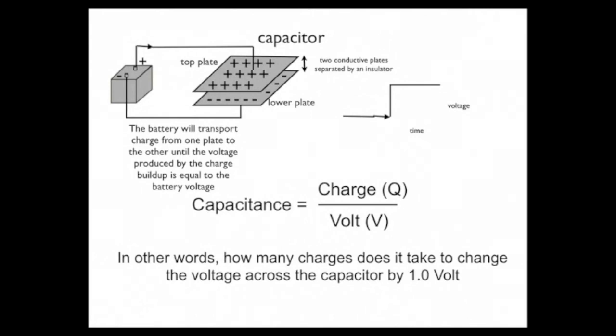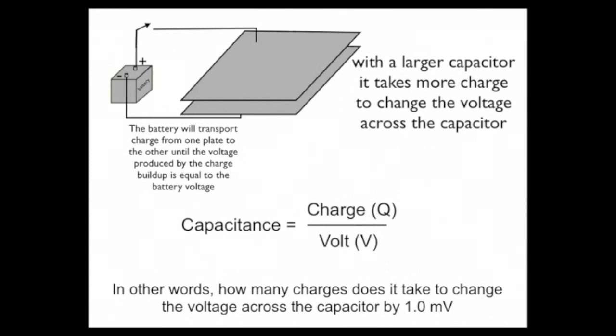Now, the capacitance is going to be determined by the size of the capacitor. Let me illustrate that. Let's take a capacitor that's larger, twice the size of the other one. The plates are twice as big. And now we connect it, and voila, what you get.